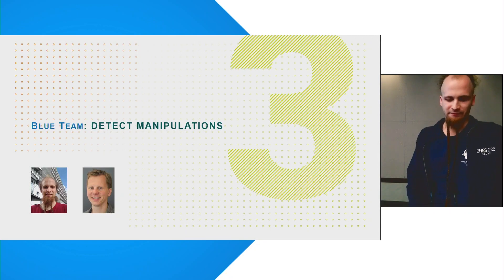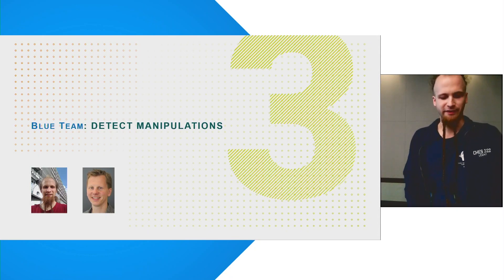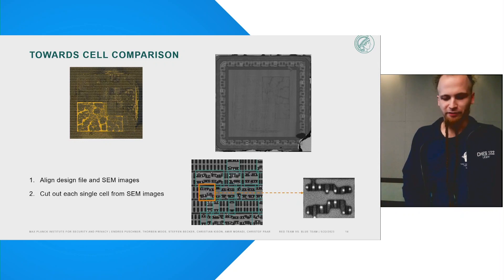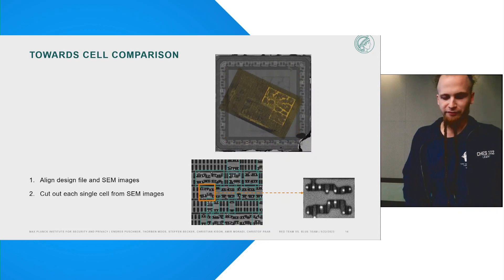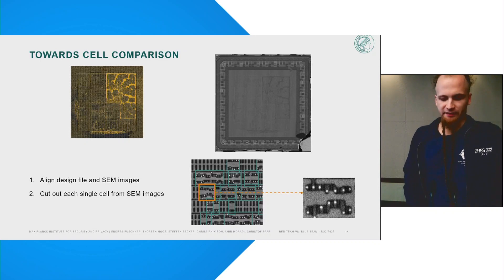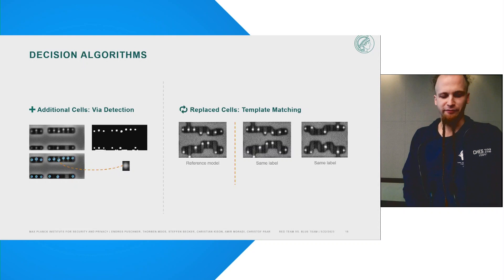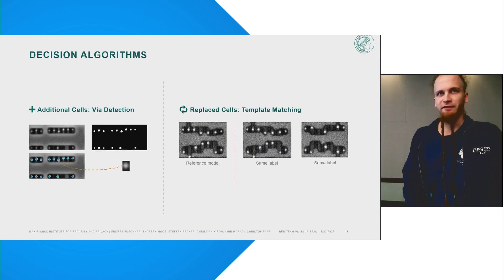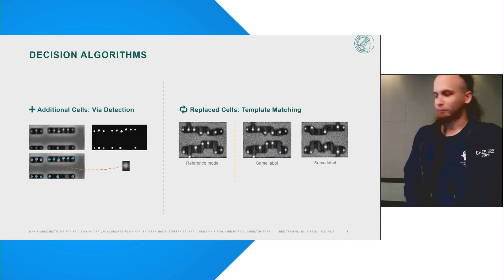Now that the blue team has the images of the chip, they can process the images of every cell and compare them to the design file. First, the design file has to be overlaid over the image using a four-point matrix transformation. It needs to be accurate so every single cell is aligned almost perfectly. Then every cell can be cut out of the microscope image and labelled with the cell type from the design file. These cut-outs can then be fed into image processing algorithms. To find additional cells that should not be there according to the design file, one good option is to find the wires. The wires contact functional cells to the routing layers above and appear as distinguishable bright white spots, detectable using binary thresholding and correlation with some gradient.